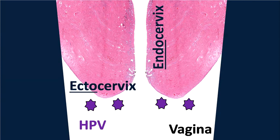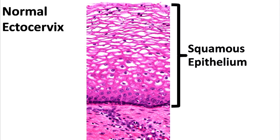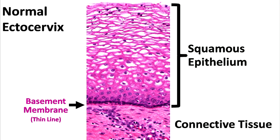The human papillomavirus most commonly infects cells of the ectocervix. A closer look at the ectocervix reveals epithelium, which sits on connective tissue. Here we flip the orientation to better visualize the epithelium of the ectocervix. The epithelium consists of multiple cell layers, which flatten out, and this is known as squamous epithelium. The epithelium sits on connective tissue, and it's separated by a basement membrane.